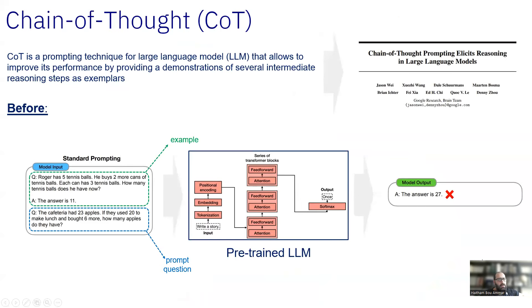So let's start by talking about COTs themselves. What is a chain of thought? A chain of thought is a prompting technique for large language models that allows improving the performance of the LLM by providing demonstrations of some reasoning steps. It was originally proposed in the paper 'Chain of Thought Prompting Elicits Reasoning in Large Language Models' from the Brain team, which is now part of DeepMind.